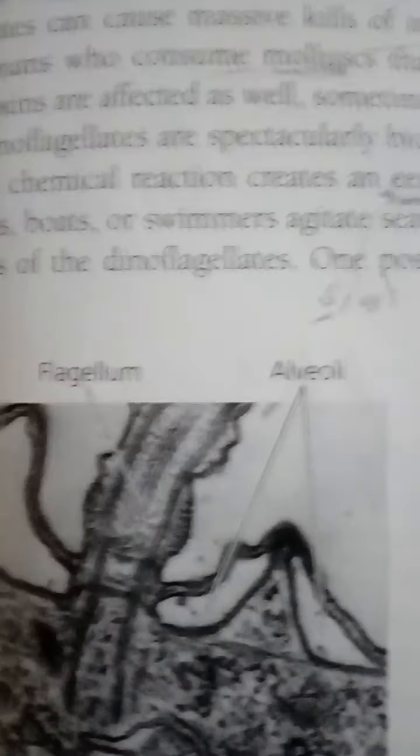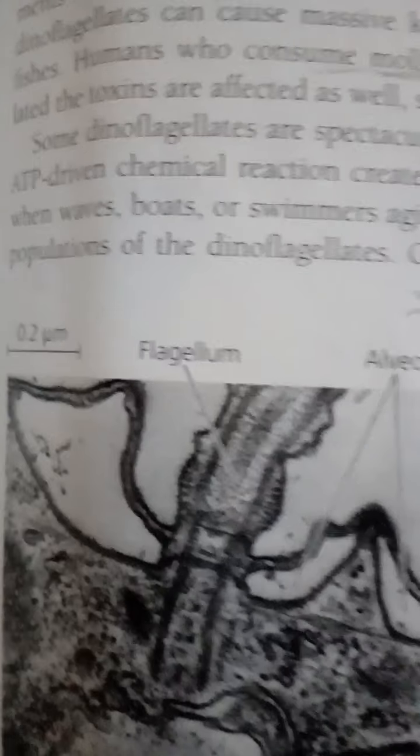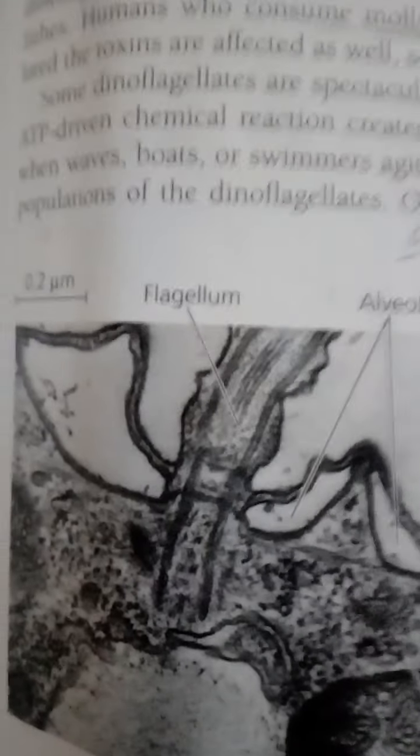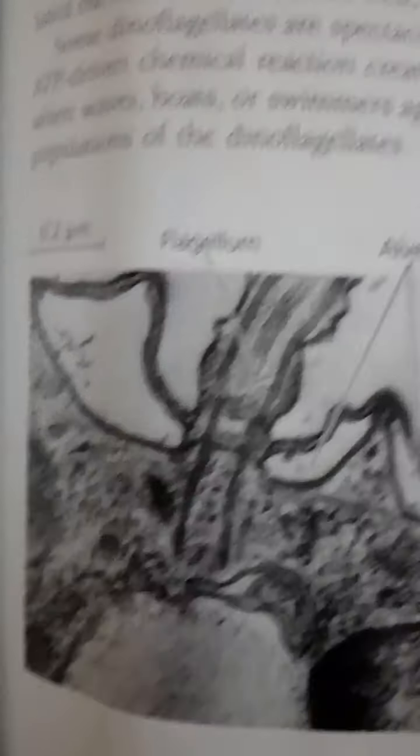The function of this bioluminescence is that when the water is disturbed by organisms that feed on dinoflagellates, the light attracts fishes that eat those predators. Some dinoflagellates are mutualistic — they live within the cells of coral polyps, the animals that build coral reefs. The dinoflagellates' photosynthetic output is the main food source for reef communities.